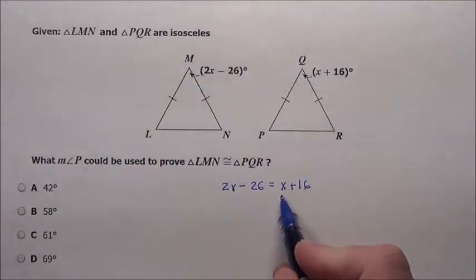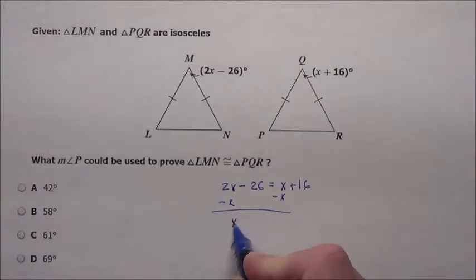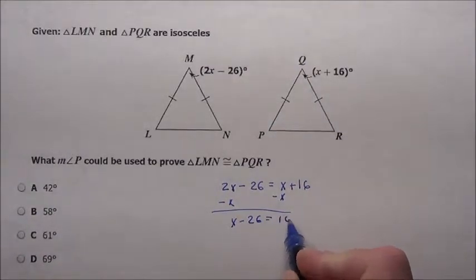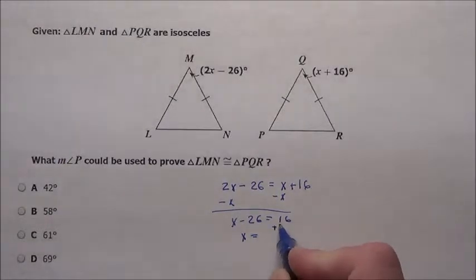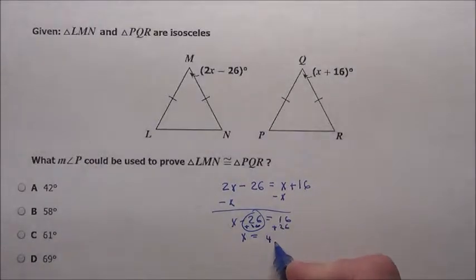When I solve this, subtract x from both sides, x minus 26 is equal to 16, add your 26, you get x's value when you add 26 here and here, which makes it go away, you get 42.